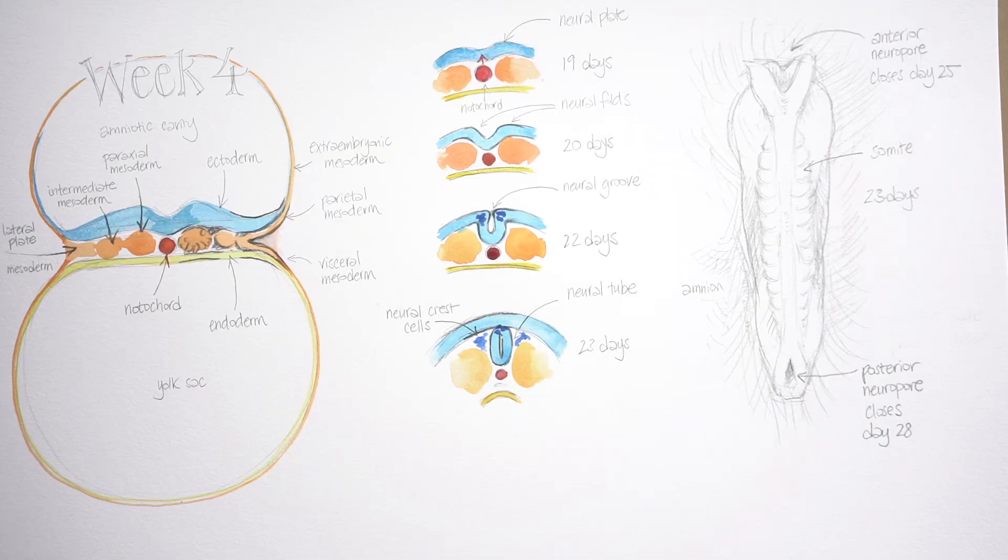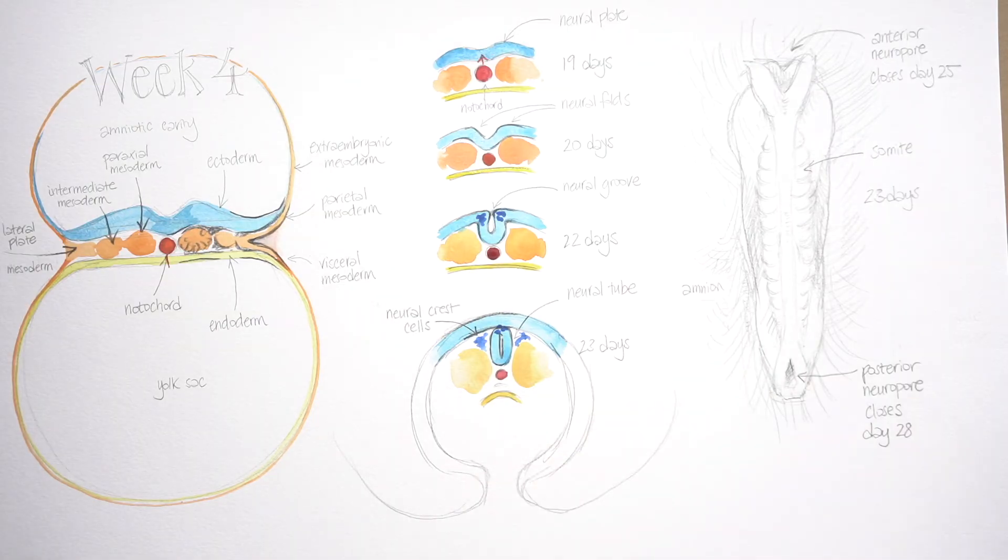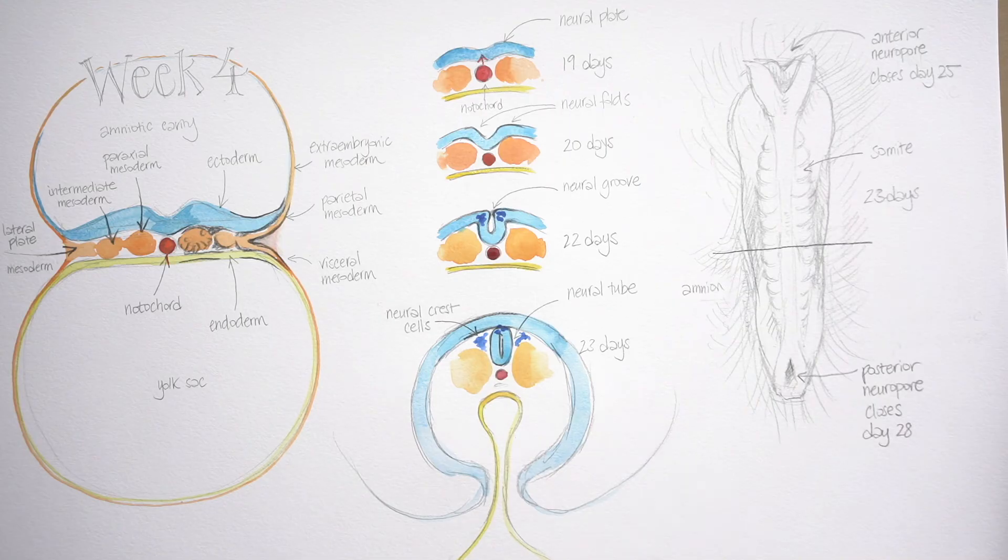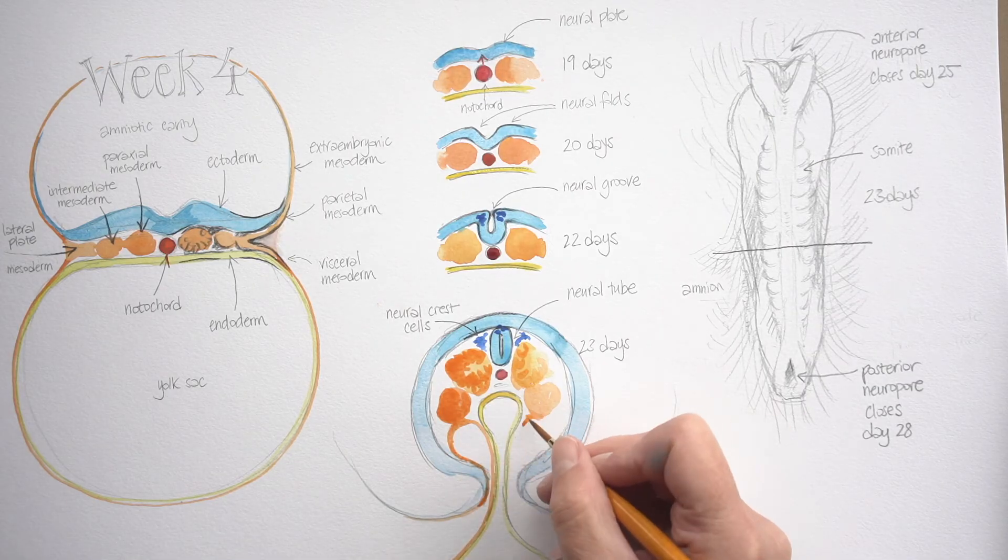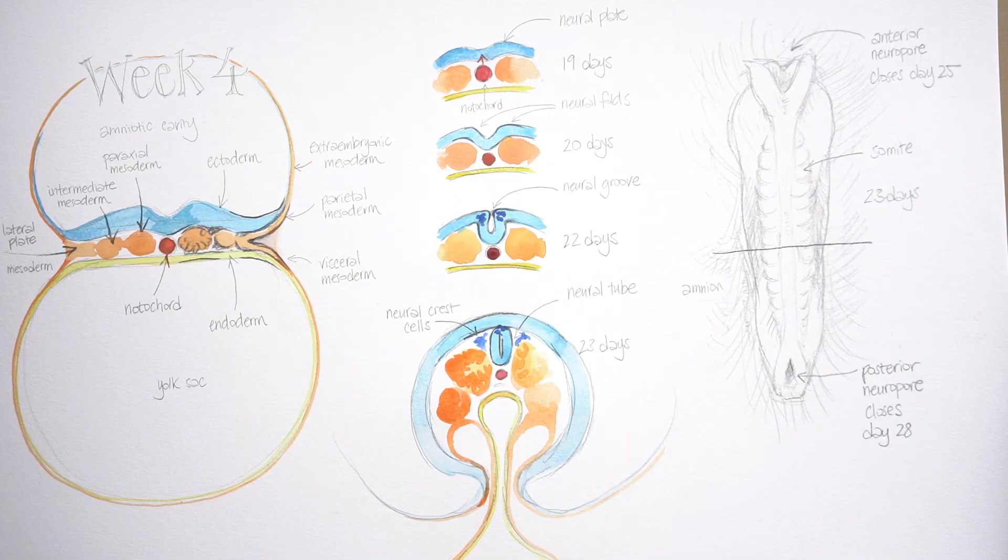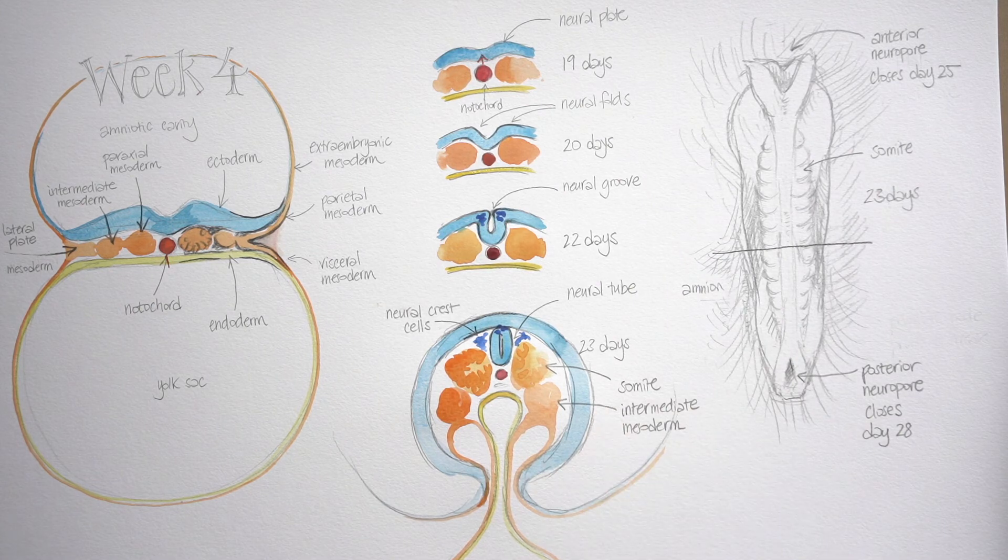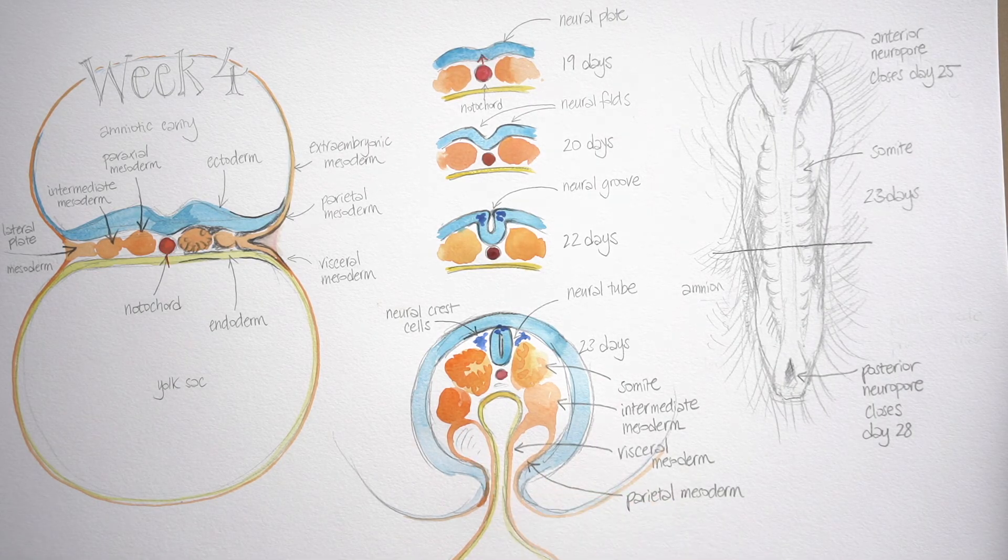Now, going back to those cross sections, I was focusing in on a very small central part of the germ disc to show the development of the neural tube. But if we look at the whole of the germ disc in cross section, we can see that it has really changed shape in week four. Just compare this diagram I'm working on at 22 days with the one to the left, which is just towards the end of week three. You can see that the disc has curled around so ectoderm is now lying around the outside of this embryo.